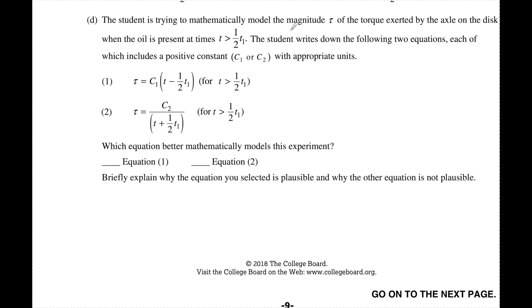The student is trying to mathematically model the magnitude of the torque exerted on the axle on the disc when the oil is present at times T greater than T one-half. So after that one-half, we start adding oil. The student writes down the formula for two equations, each which includes a positive constant C1 or C2 with appropriate units. Which equation better mathematically models this experiment? So if I look at this, I have some torque and some constant. So this says as T goes up, my torque force goes up. So this is no good.